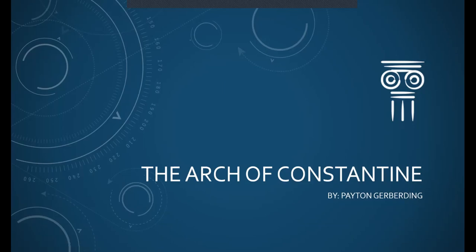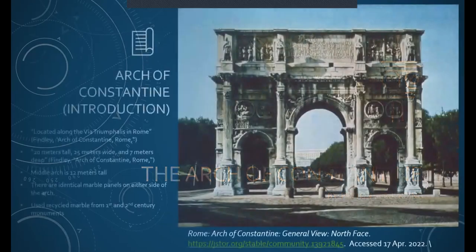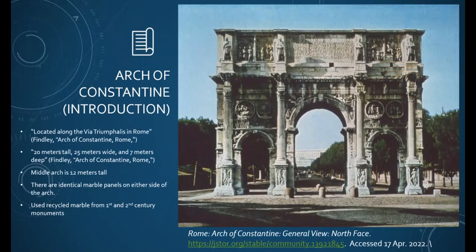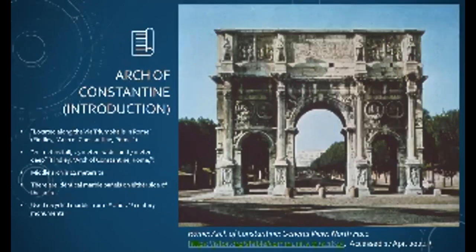The Arch of Constantine is located along the Via Triumphalis in Rome, and it is situated between the Flavian Amphitheater, better known as the Colosseum, and the Temple of Venus and Roma. The arch is about 20 meters high, 25 meters wide, and 7 meters deep.